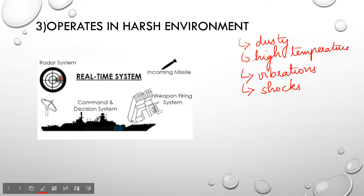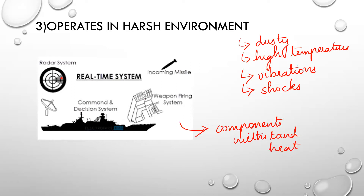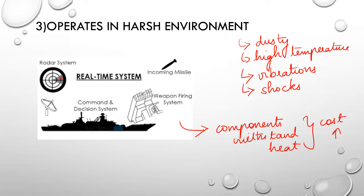Consider a weapon firing system. If an embedded system is used in a weapon firing system, the embedded system must withstand a lot of heat. You must select components in such a way that they can withstand heat. This is one of the important characteristics of embedded systems. When you select components which withstand heat, the cost will naturally be high — when it works in a harsh environment, the cost will also become high.